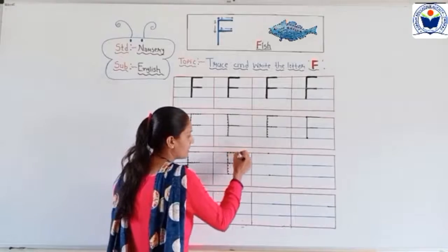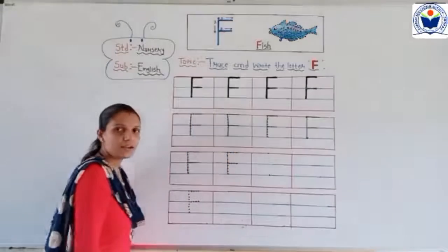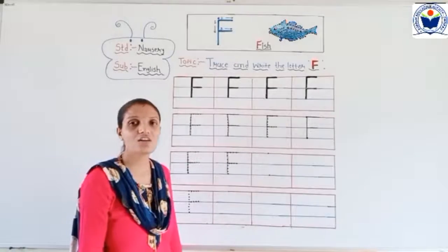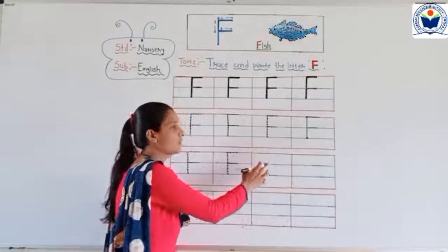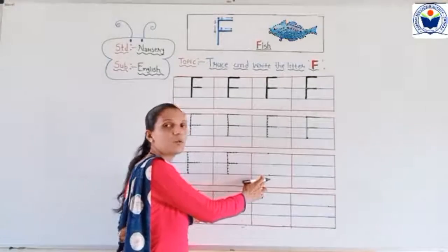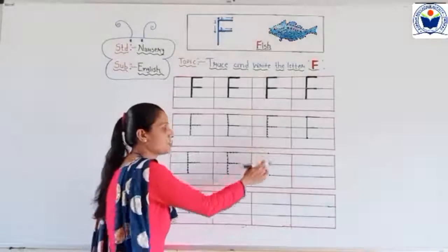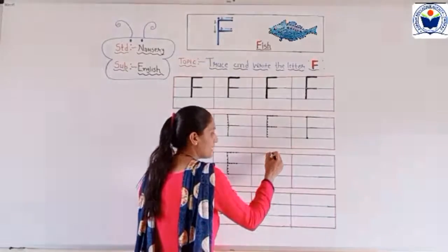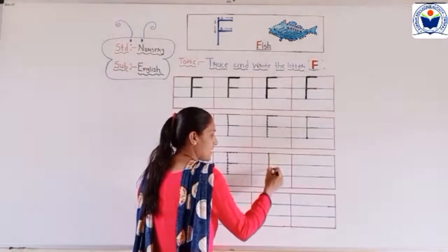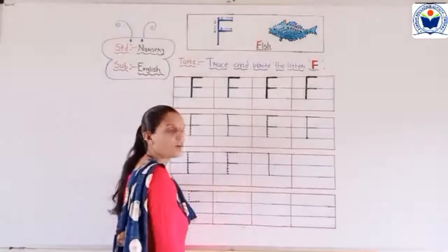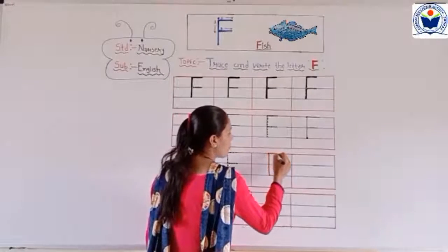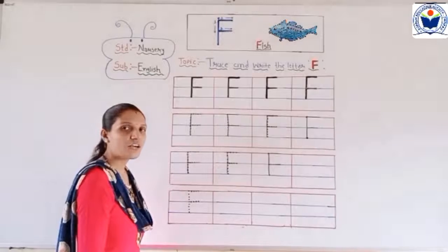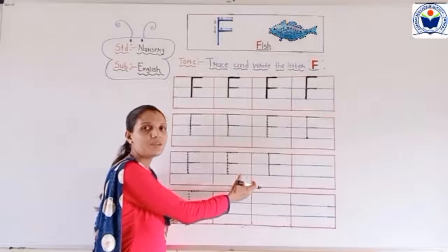Trace properly — small dots to join. Now what do we do? We have two dots. First small dot on top red line, second dot on blue line — standing position. We will start from the top red line. Make a standing line till the second blue line. And a sleeping line on the top red line. And one more sleeping line on the first blue line. This is capital letter F.